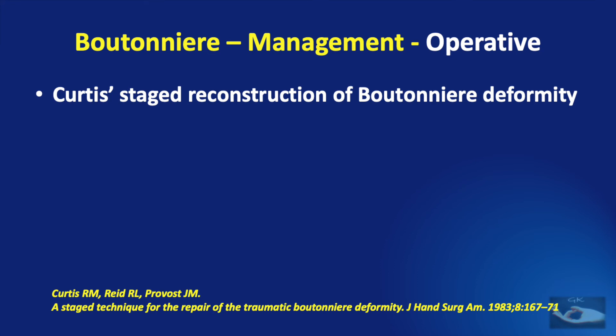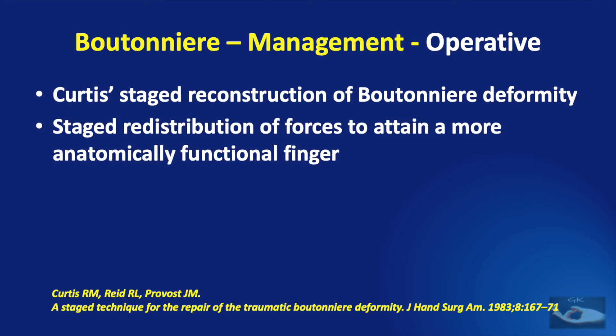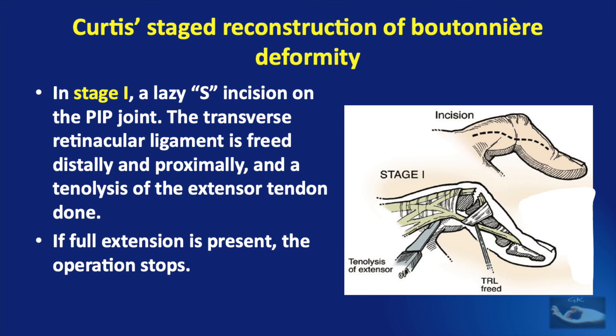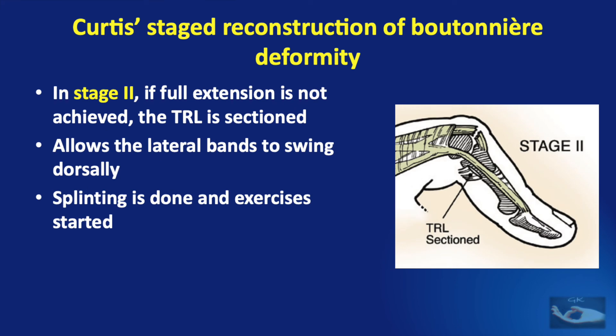All these techniques have been integrated into the Curtis staged reconstruction of Boutonniere deformity — a staged redistribution of forces in a step-by-step fashion to attain a more anatomically functional finger. In Stage 1, a lazy-S incision is made over the PIP joint, the transverse retinacular ligament is freed distally and proximally, and a tenolysis of the extensor tendon is done. If full extension is achieved by this step, the operation stops. If not, we proceed to Stage 2, where the transverse retinacular ligament is sectioned, allowing the lateral bands to swing dorsally, followed by splinting and exercises.